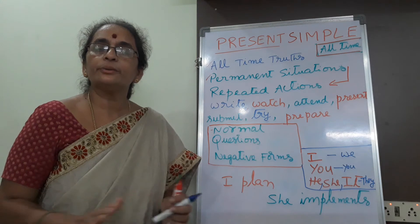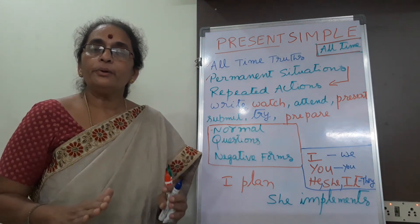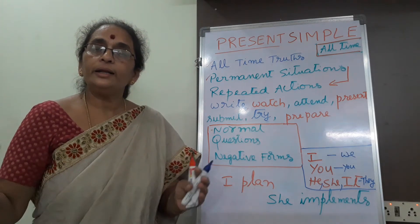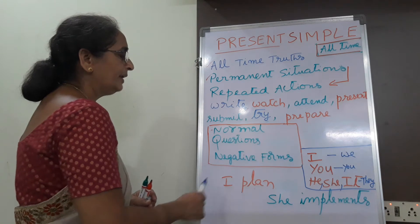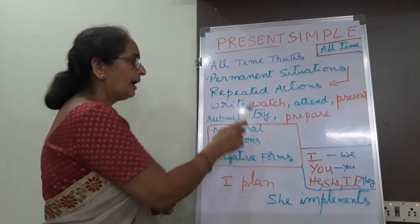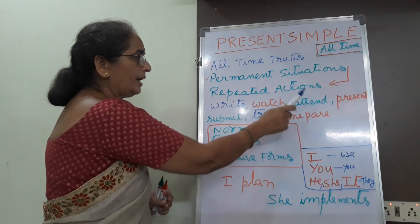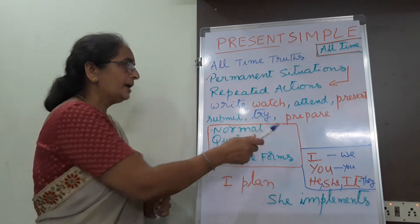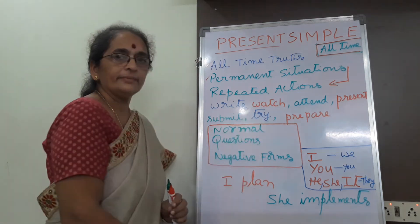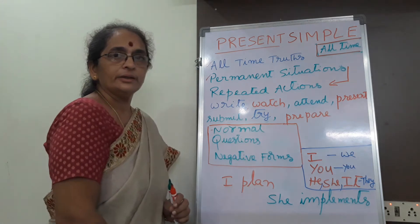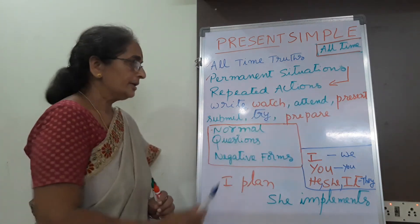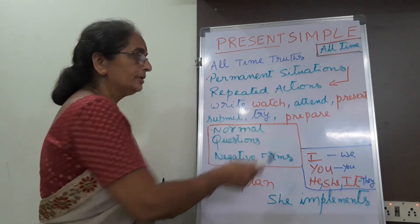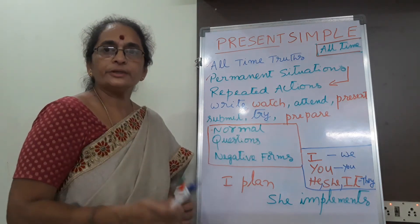Every time you apply this rule, whenever you use a verb for third person singular number, you add S to that verb. Let us first start with first person: I write, I watch, I attend, I present, I submit, I try, I prepare. For example: I write a story, I watch the TV, I attend the meeting, I present PowerPoint in the seminar, I submit my report, I try this calculation, I prepare a project report.